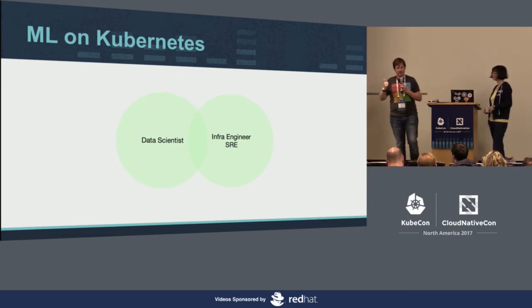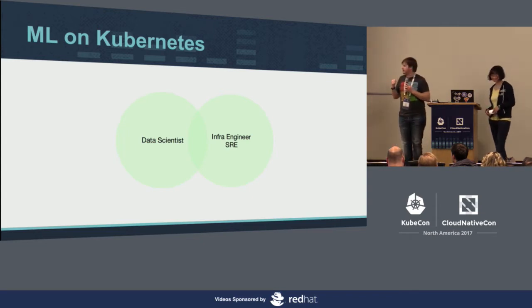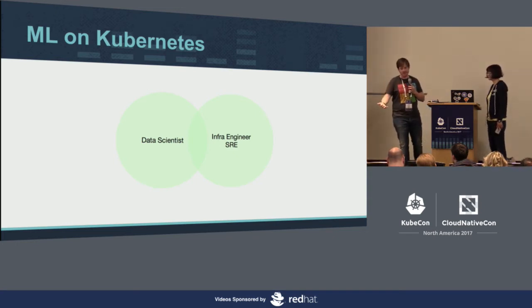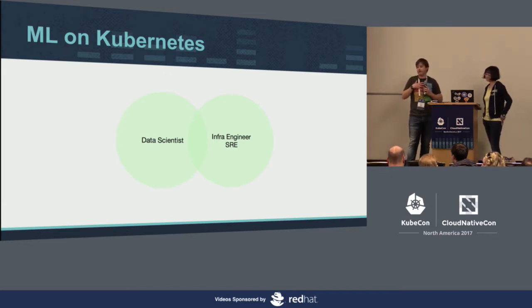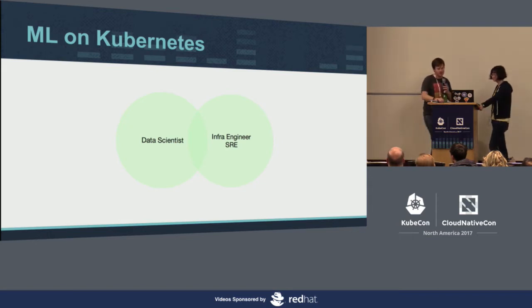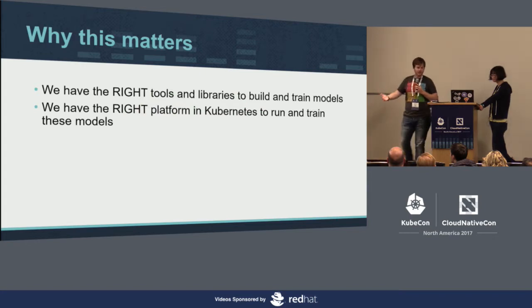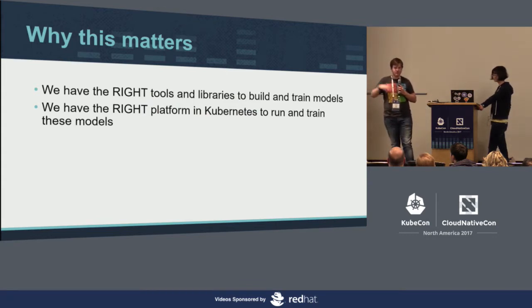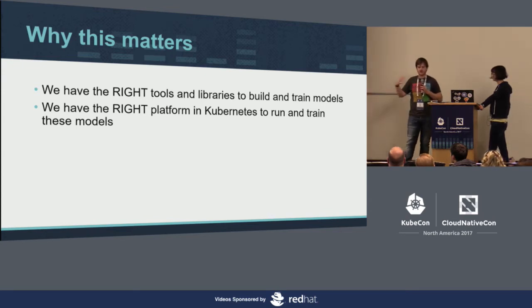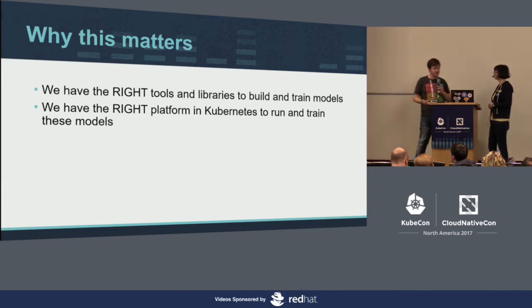The problem is that in the middle of that Venn diagram lives no one. You have highly talented people at the infrastructure level who know how to build Kubernetes with their eyes shut, and then you have a team of more than capable data scientists chomping at the bit to use this infrastructure. What we're looking to do with this talk is start a conversation around how we get people in that middle point so that data scientists can get the best out of Kubernetes to run their machine learning and deep neural network workloads.